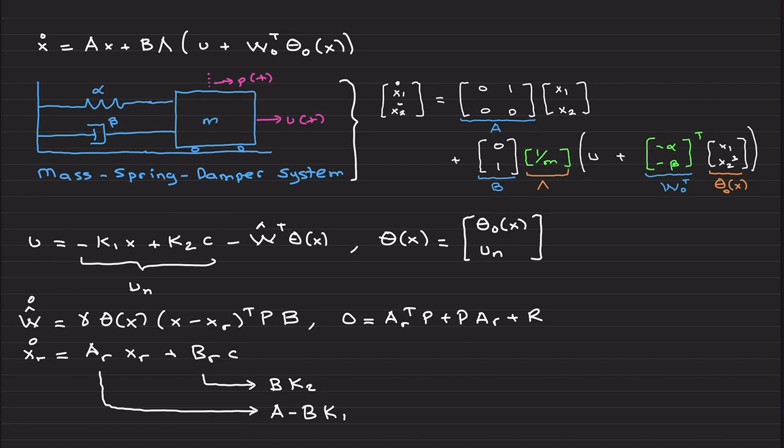You have your weight update law. Gamma is the positive adaptation gain, theta is the basis here x minus xr. This was e, P you are basically getting by solving this Lyapunov equation, and this is the reference model that you designed when there was no uncertainty, meaning theta zero was zero and lambda was identity.